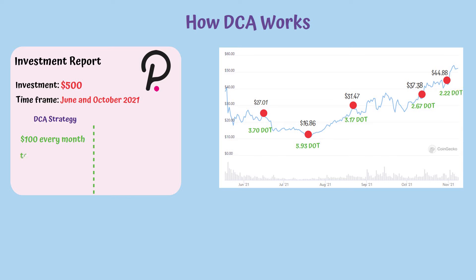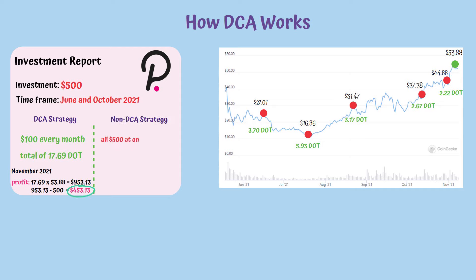After these five months, you have a total of 17.69 DOT. In November, the price of 1 DOT stood at $53.88. This means that the profit you could have registered was $453.13 above your initial investment. But if you had invested all $500 at once in October, you would have had 11.14 DOT. That means that in November, when the price of 1 DOT was $53.88, your fiat equivalent would have been $600, with only $100 above your initial investment.